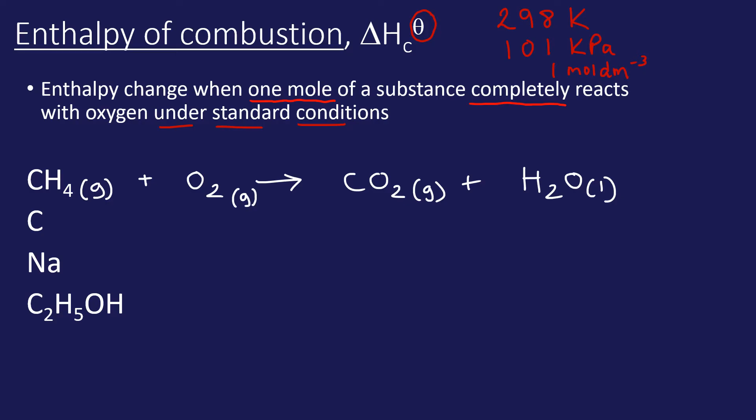We need to balance the equation, but when I balance it, I must make sure that methane remains a one because it has to be when one mole of a substance completely reacts. Two here and two here balances the equation. The second equation, carbon reacting with oxygen. Carbon is graphite, a solid reacting with oxygen gas. Complete combustion makes carbon dioxide, not carbon monoxide. That equation is balanced.